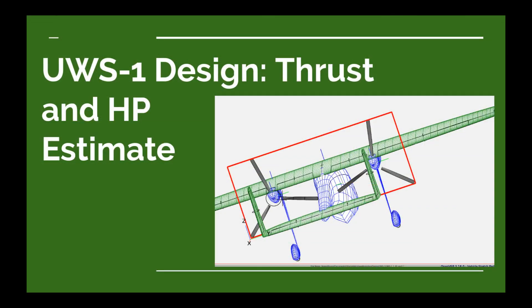Thanks Keith. Let's see if we can come up with an estimate on the thrust and horsepower for the motors on the UWS1 ultralight airplane. This is just going to be an estimate — in the future we'll try to get a more accurate value. In the last design video we calculated the surface area for the vertical tail using the tail volume method, which works pretty well, but not for this particular airplane with two motors mounted on the wings. If one motor fails, we'll have asymmetric thrust, and that tail volume may not be enough to deal with it.